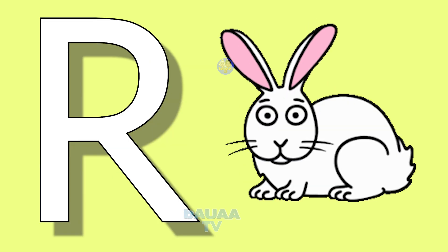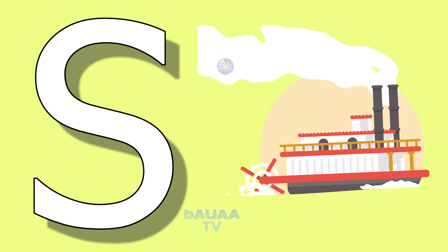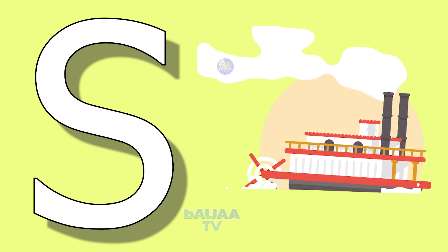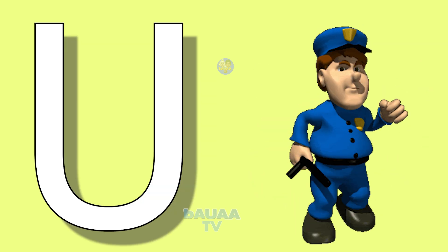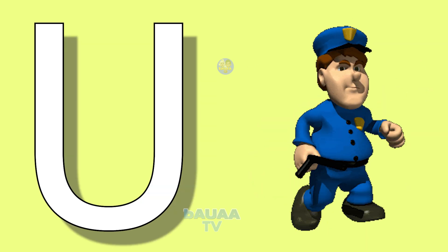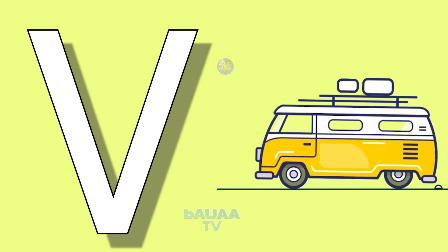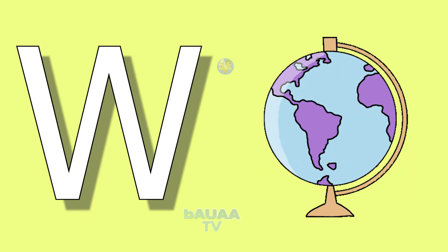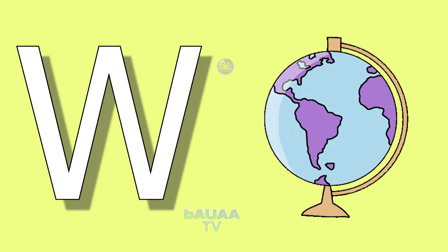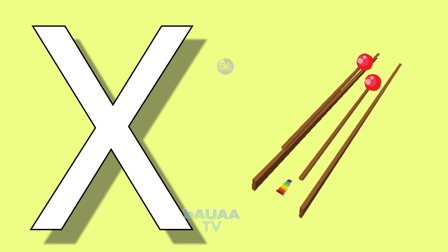R for rabbit, rabbit means hargosh. S for sheep, sheep means zahad. T for tomato, tomato means tomato. U for uniform, uniform means worthy. V for van, van means van. W for world, world means dunya.